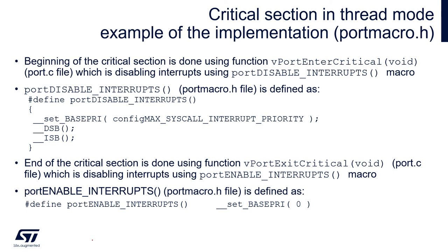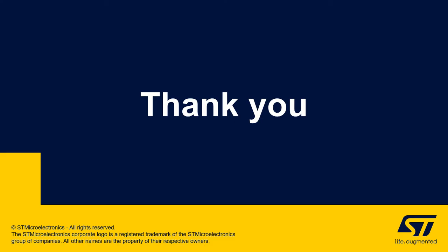To exit the critical section, we use the C function vPortExitCritical without an argument, found in port.c. This function calls the portENABLE_INTERRUPTS macro from portmacro.h, which clears the BASEPRI mask register - setting it to zero instead of configMAX_SYSCALL_INTERRUPT_PRIORITY - so no interrupts are masked and the entire interrupt system is fully operational again. Thank you for watching this video.